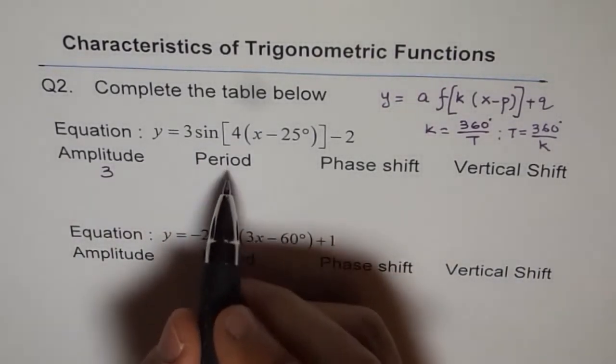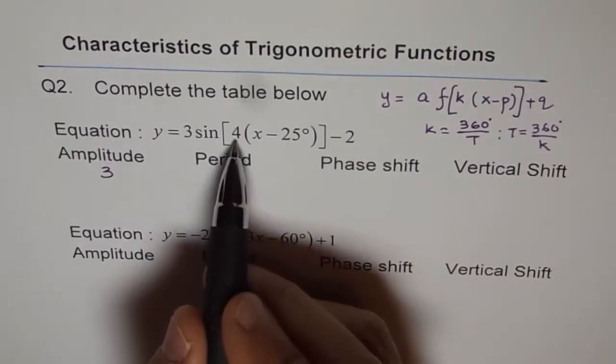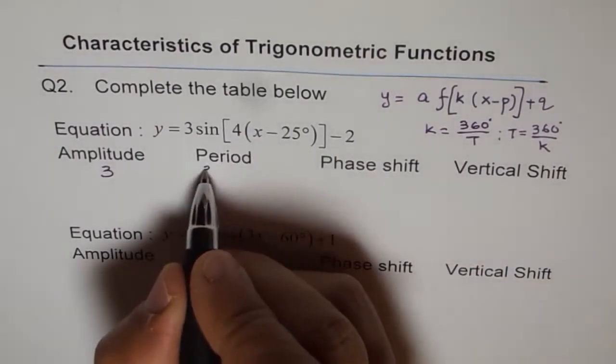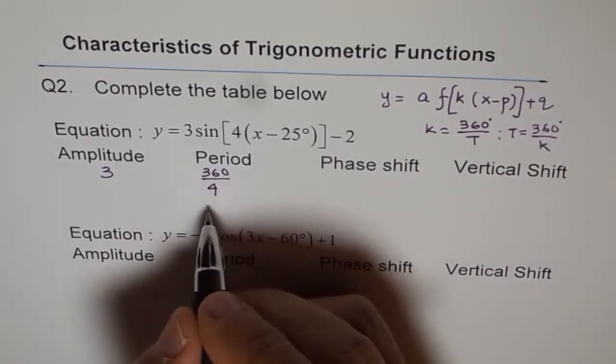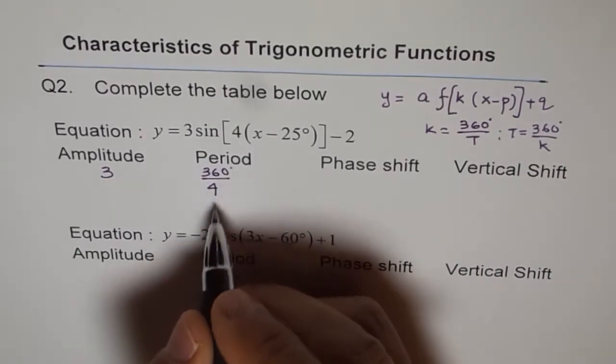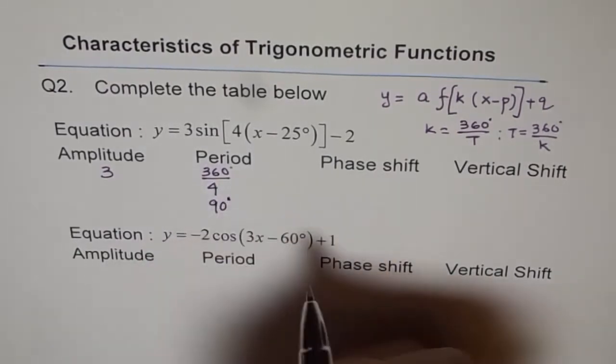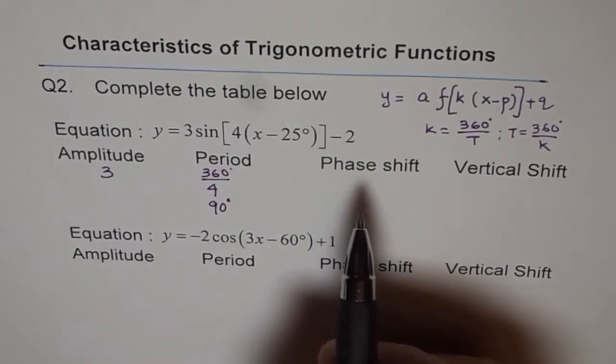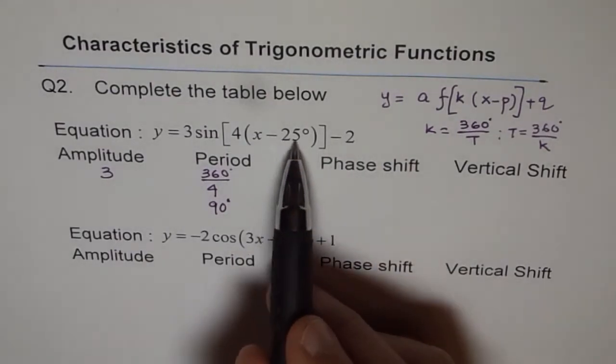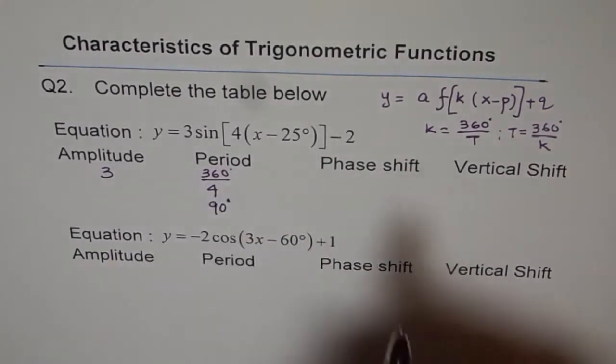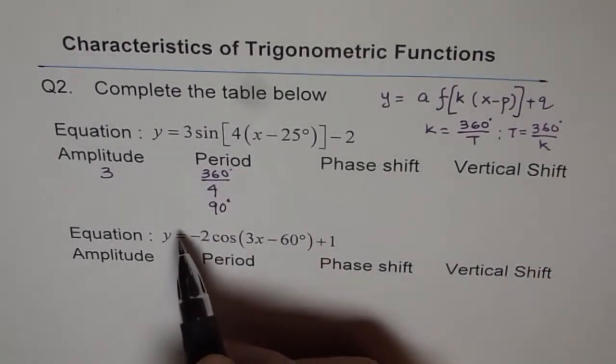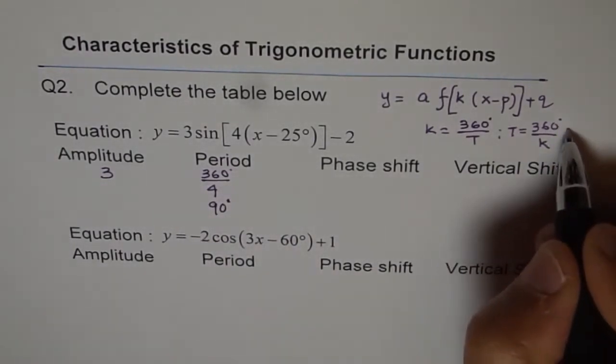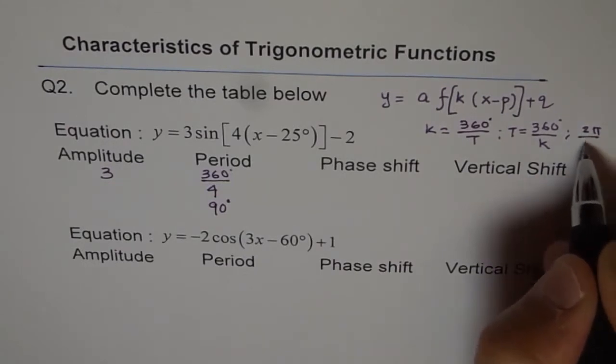Time period you need to calculate, because k value is given to us, not the time period. So we can calculate it as 360 divided by 4. And 360 divided by 4 in degrees will give us 90 degrees. Those of you who are working in radians, well this is not in radians. So degrees is good enough. For radians it will be 2 pi divided by k. Now let me write that also. For radians it will be 2 pi divided by k.